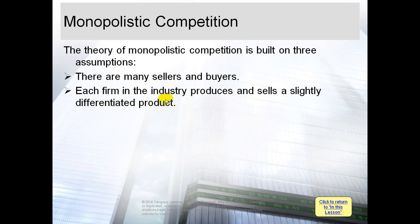In perfect competition, what about the product? The product is identical — meaning all firms produce the same product, not differentiated. We took the example of perfect competition with people who sell vegetables. If I have a vegetable stall, can I make my product differentiated, unique, different from other people? No, because a vegetable is a vegetable — you cannot make it different.